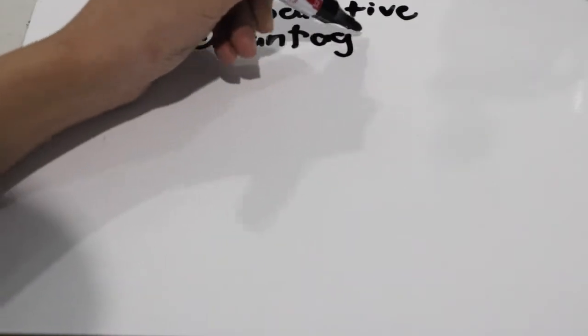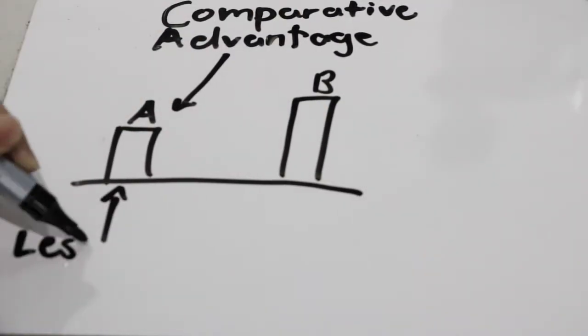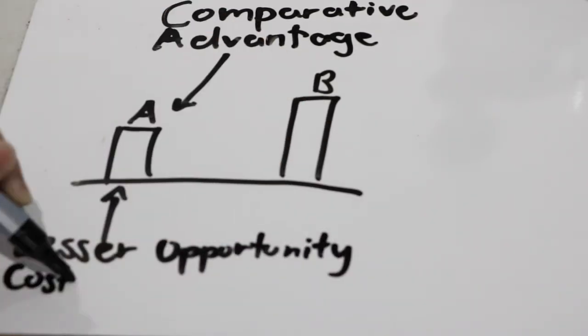You know what the principle of comparative advantage is? No. What is it? It is when an individual, firm, region, or country with the lowest opportunity cost of producing a good should specialize in the good. I'm correct, right?